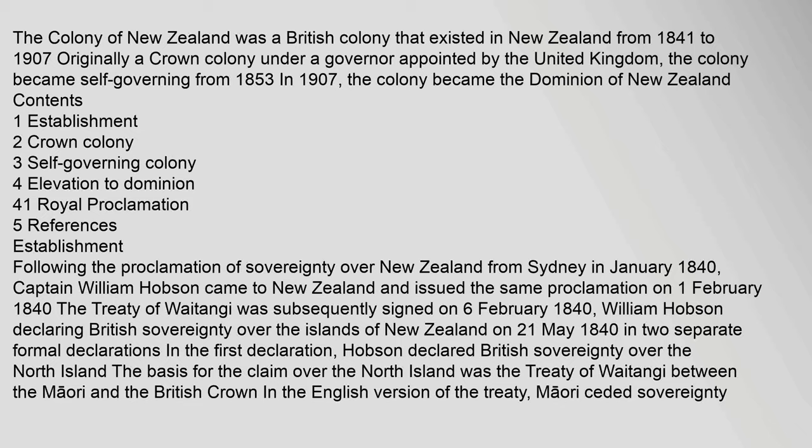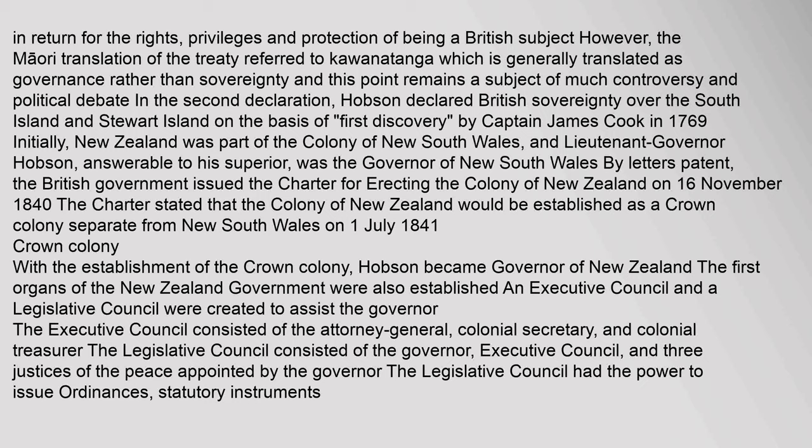In return for the rights, privileges and protection of being a British subject. However, the Maori translation of the treaty referred to Kawanatanga, which is generally translated as governance rather than sovereignty, and this point remains a subject of much controversy and political debate. In the second declaration, Hobson declared British sovereignty over the South Island and Stewart Island on the basis of 'First Discovery' by Captain James Cook in 1769.